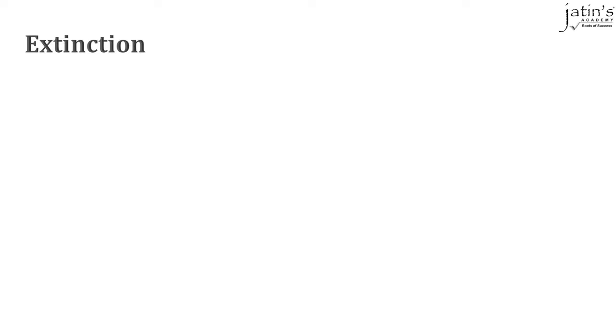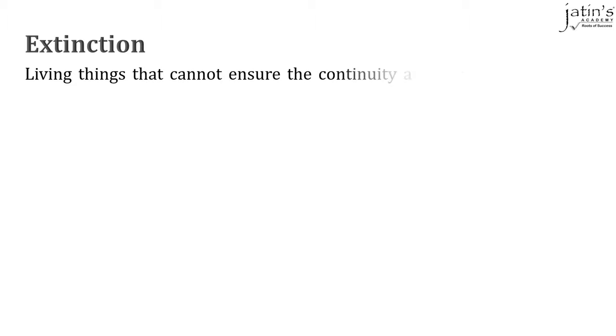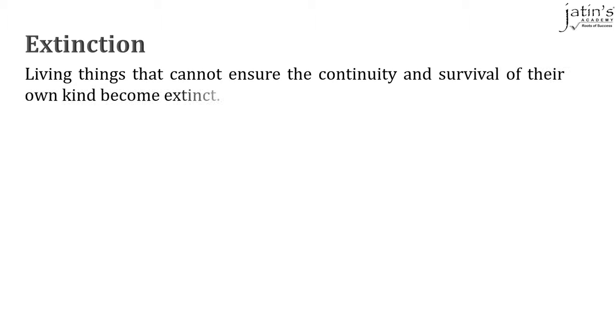Once these plants develop enough roots, they will fall off from the leaves and grow into new plants. All living things reproduce to ensure the survival of their own kind. Hence, living things that cannot ensure the continuity and survival of their own kind become extinct.